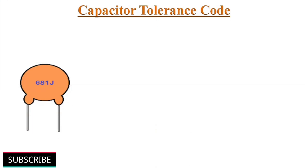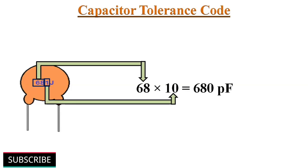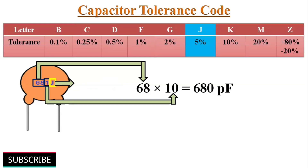Some capacitors have a tolerance code printed on them. For example, if a ceramic capacitor has 681J printed on its surface, the letter J indicates its tolerance. 681 gives a value of 680 picofarads, and J indicates a tolerance of plus or minus 5%. A table shows the tolerance values for different letter codes.